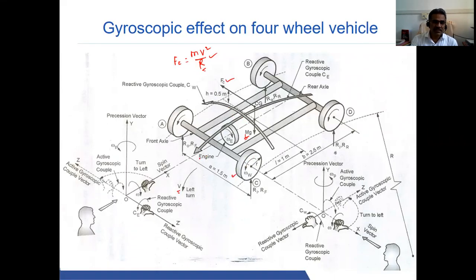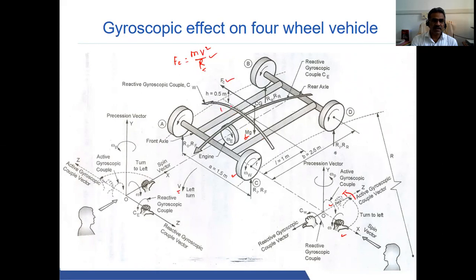In addition to centrifugal force, the wheel is rotating while taking a left turn, which subjects it to a gyroscopic effect, producing a gyroscopic couple. When viewed from this direction, it is rotating in the counterclockwise direction. When taking a left turn, the active gyroscopic couple acts in one direction and the reactive gyroscopic couple acts in the opposite direction.